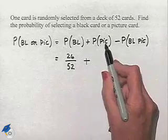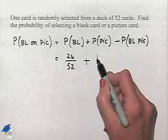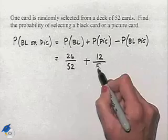The picture cards, we have Jack, Queen, and King for four different suits. That's 3 times 4 or 12 different picture cards in our deck of 52 cards.